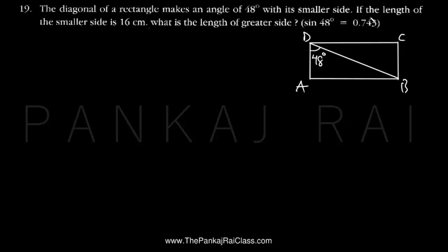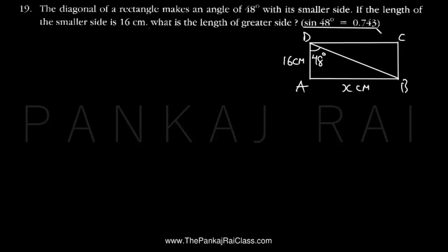The length of the smaller side is given as 16 centimeters. We have to find the length of the greater side. Let's say the greater side AB has length X centimeters. So we have to find AB. We have also been given that sine 48 is 0.743.